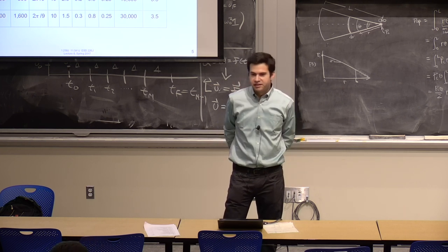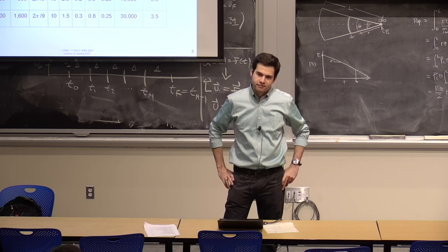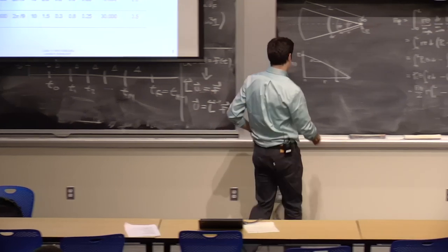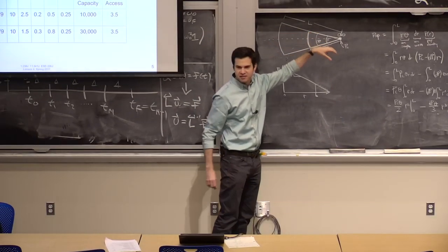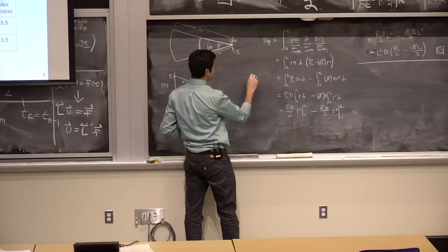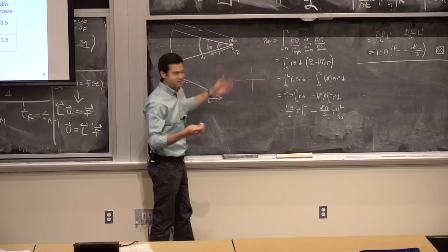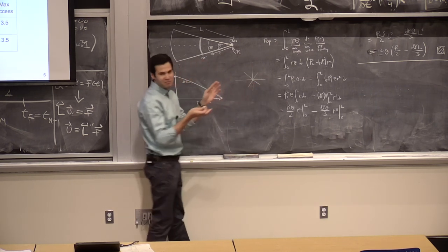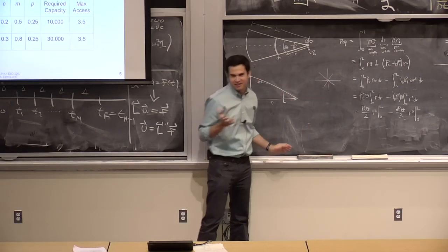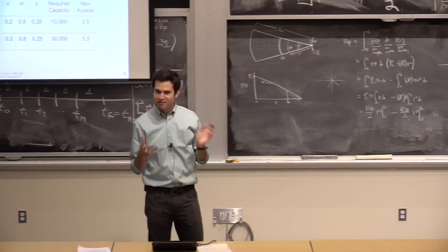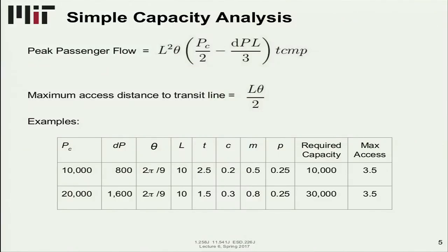That seems like a lot. It is a lot, but it depends how many lines you have in a city. If you think of a city with several lines going in radially, this transit corridor serves about a 40 degree angle. It's not that unrealistic to think of some line with a 40 degree angle coming into the CBD from outside.